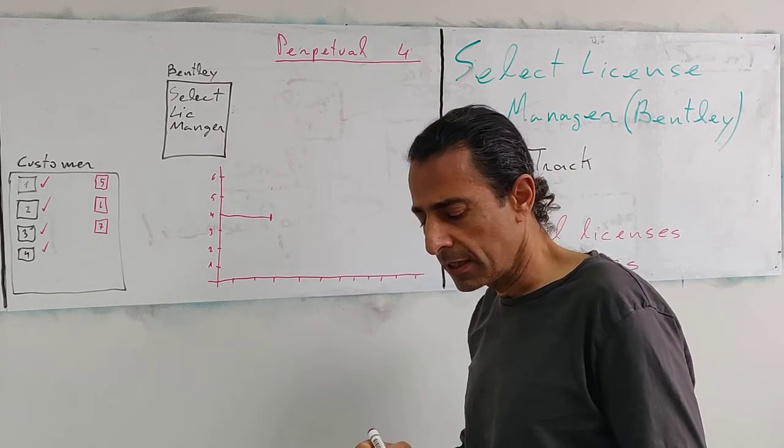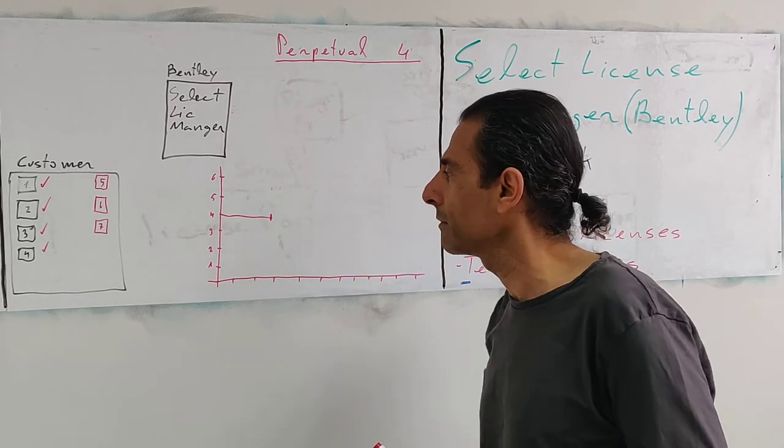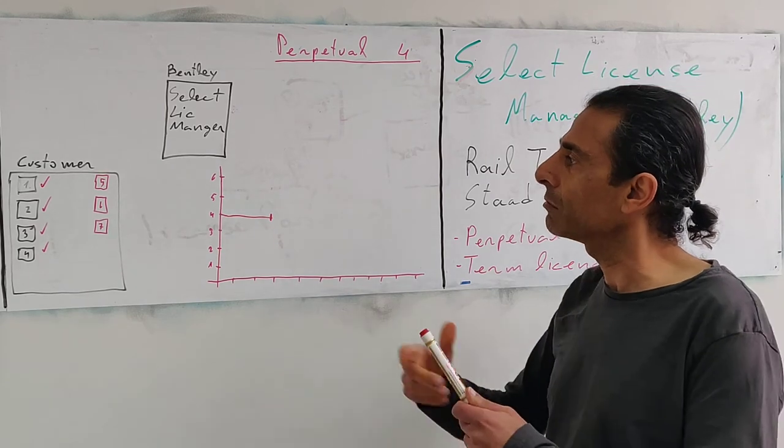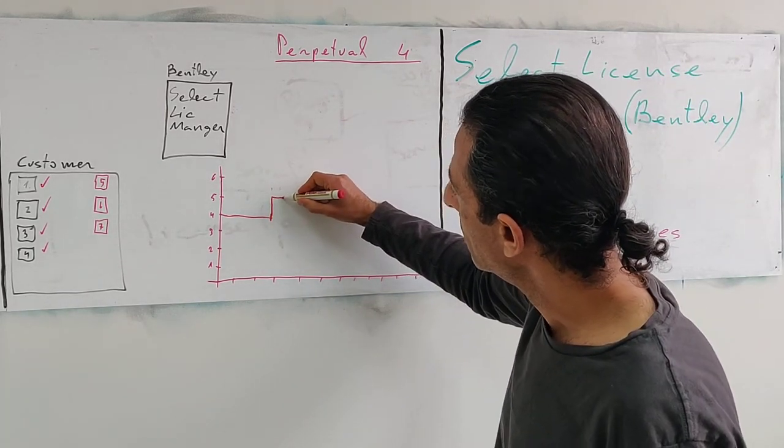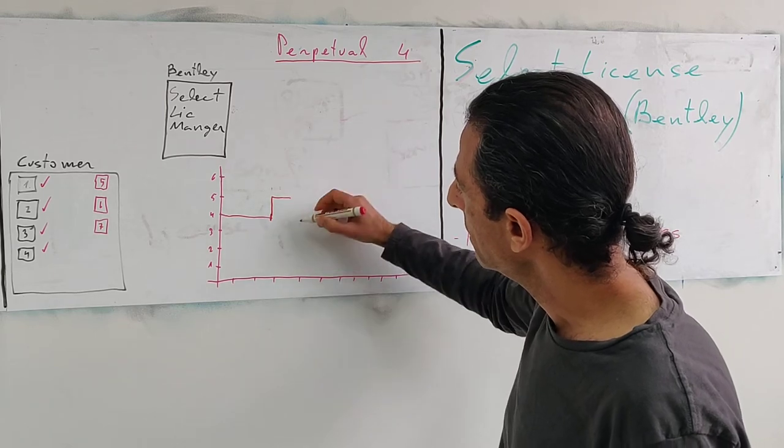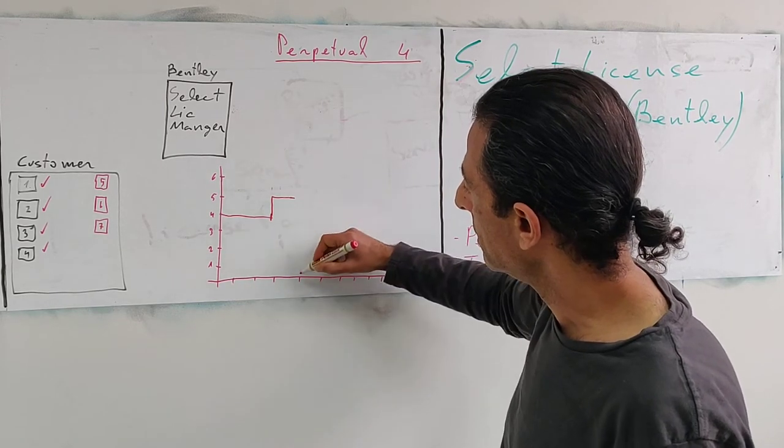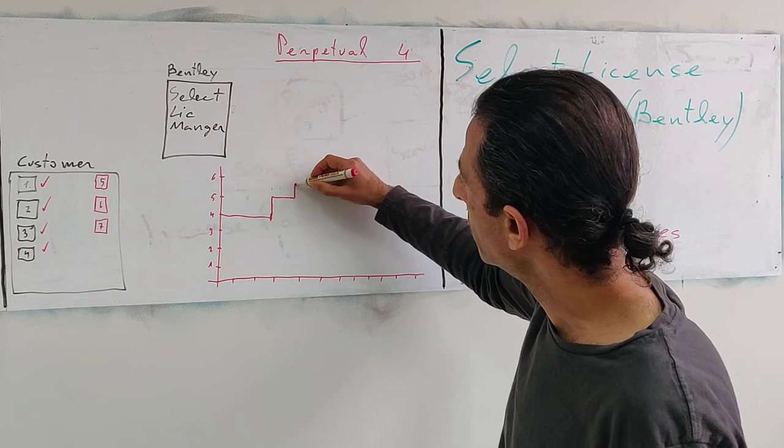The peak usage is measured. So additional users came in and let's say I consumed one more here. But here there were more users and on this day the peak was higher.